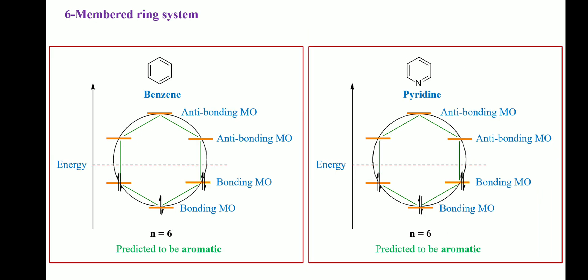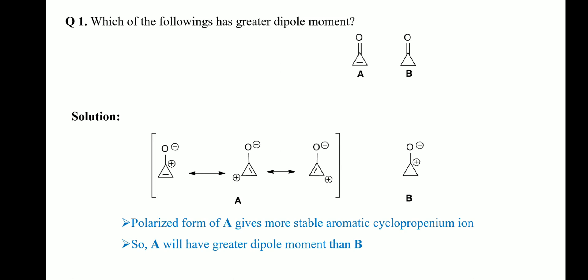The Frost diagram of a six-membered ring system is a circle inscribed with a hexagon, one vertex pointing downward. Three orbitals below the horizontal diameter are bonding MOs, while the three above are anti-bonding. In both benzene and pyridine, six pi electrons all occupy the bonding MOs. With no unpaired electrons, both molecules are diatropic — aromatic.